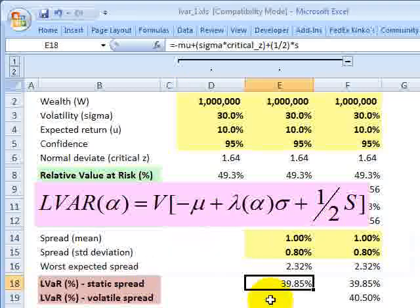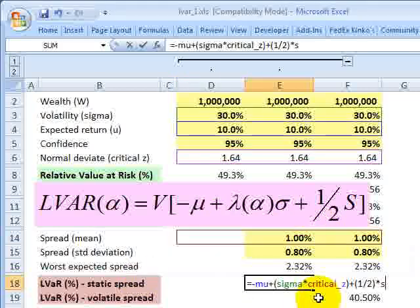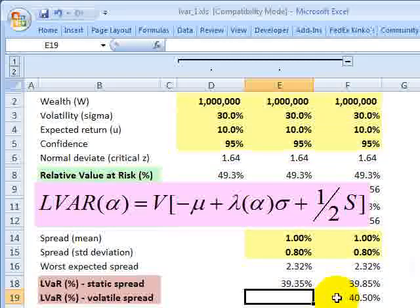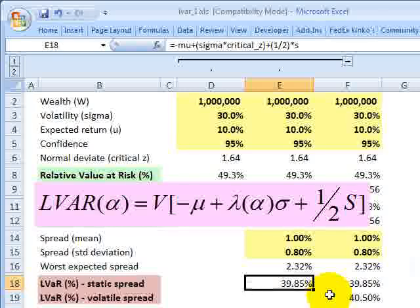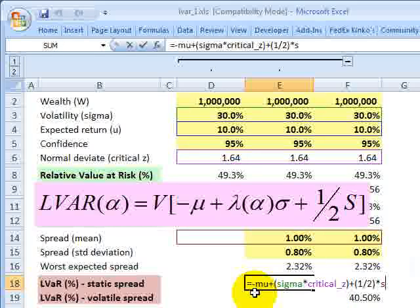Okay, so now I'm going to come right down here and take this out. Before I do anything else, I've got here the regular absolute value at risk that we looked at before, negative the expected return plus sigma times the normal deviate. And all I need to do is add one-half the spread. And then that increases my absolute VAR by one-half the spread.